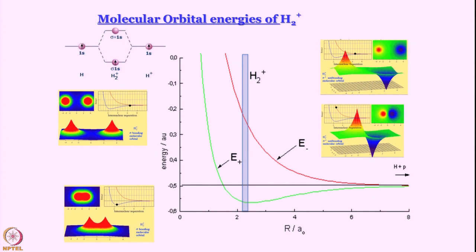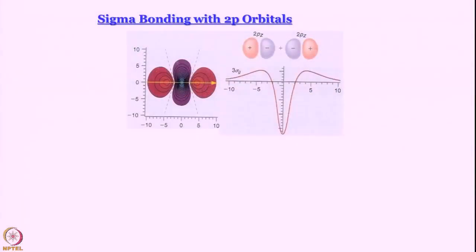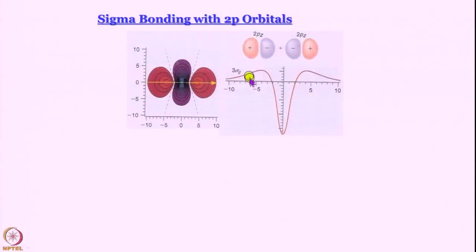An important point: at equilibrium bond length, the stabilization of the bonding orbital is actually less in magnitude compared to the destabilization of the anti-bonding orbital. This can be explained qualitatively by buildup versus depletion of electron density between the two nuclei, but only qualitatively. J and K can be evaluated numerically — by computer programming, which plays a big role in chemistry — for different values of capital R.